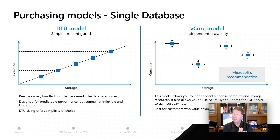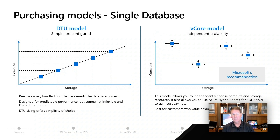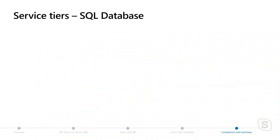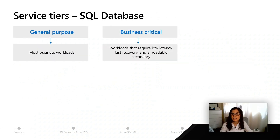You pick your database or a pool, then you pick your purchasing option, and if you choose the vCore model, then like managed instance, you're going to have service tier choices. For Azure SQL Database, there are three service tiers available.